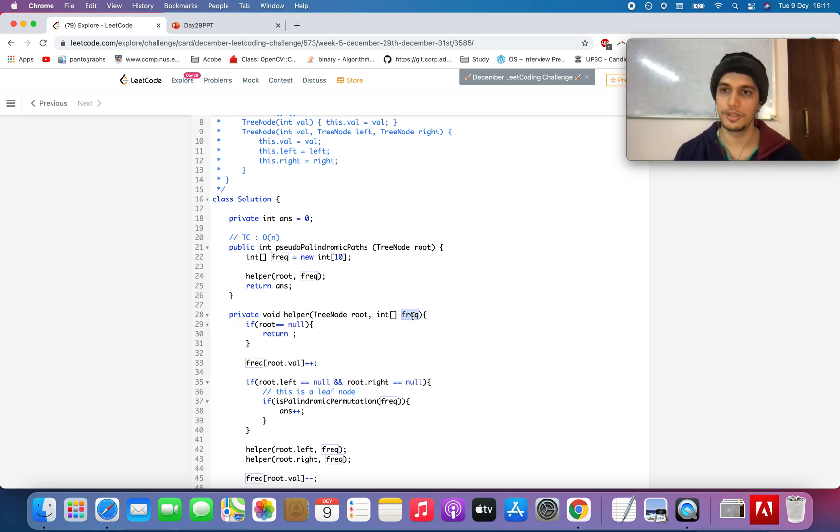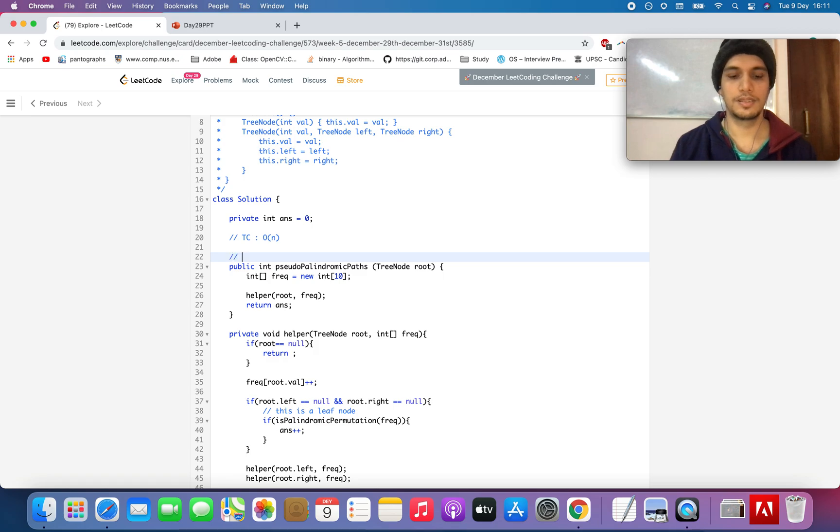So at each node, the worst case space complexity for a skewed tree would be the size of the frequency array into order of n. That is SC would be order of n into 10 size, that is constant size, so that is again order of n. Thanks for watching the video, hope you enjoyed it.